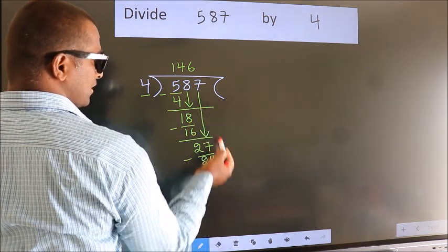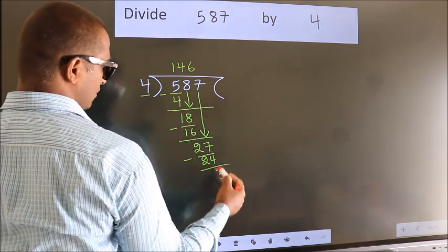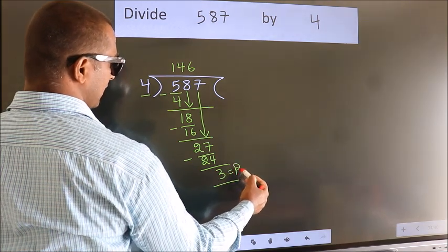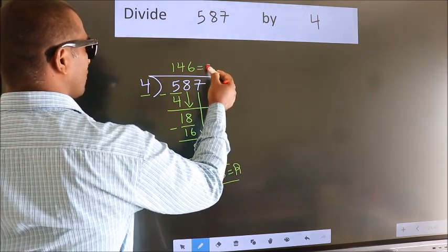No more numbers to bring it down. So we stop here. This is our remainder. This is our quotient.